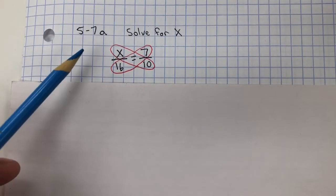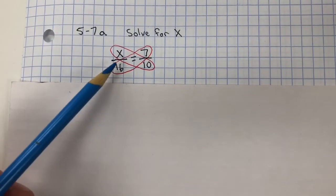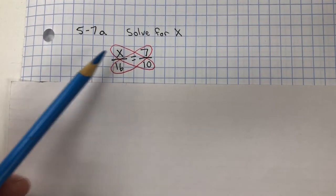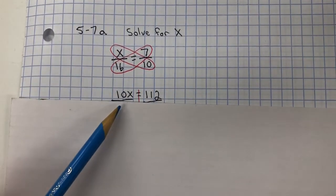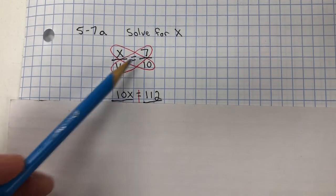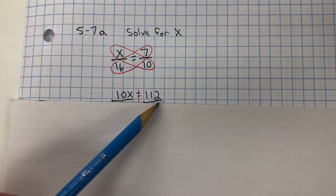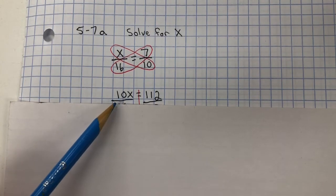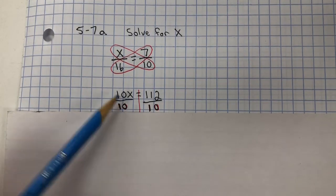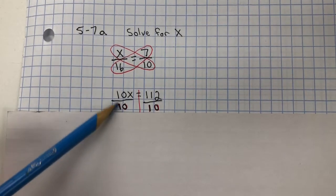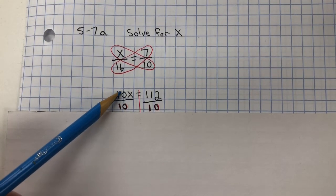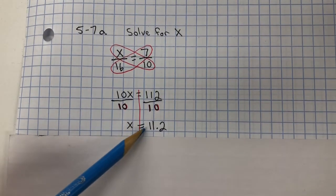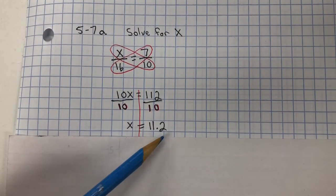In problem 5-7A, I need to solve for X. And one way to do that is to cross multiply. 10 multiplied by X is 10X. 16 multiplied by 7 is 112. Now I'm going to do inverse property of multiplication, which is division. I divide both sides by 10, which creates the giant 1. 1 multiplied by X is X. 112 divided by 10 is 11 and 2 tenths.